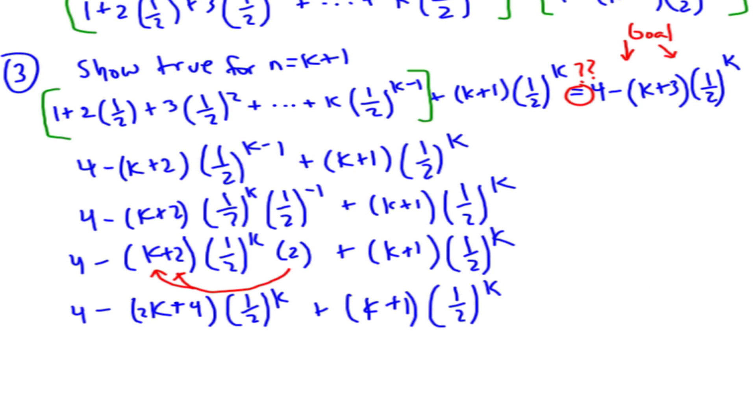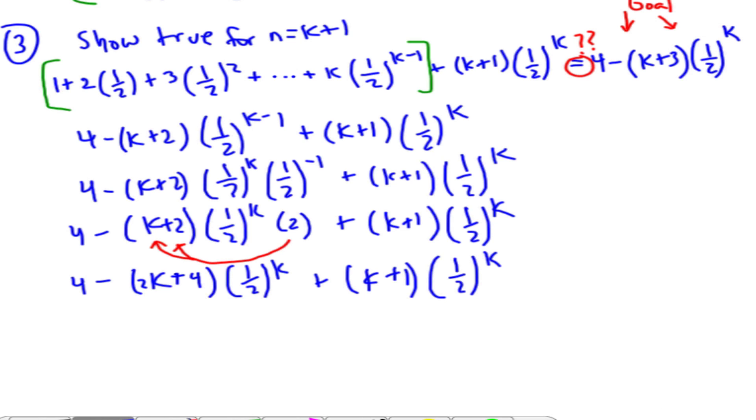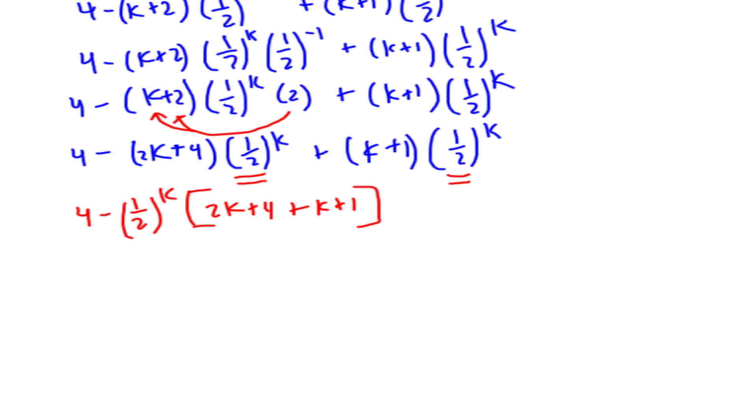All right, now I'm going to do this next step in red, because this is what I did, and it's incorrect. What I did is I recognized that I both have a 1 half to the k, 1 half to the k. So I factored out a 1 half to the k.